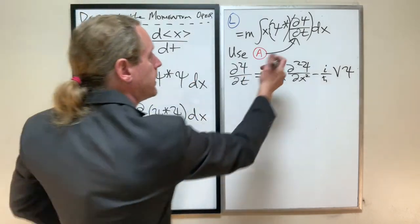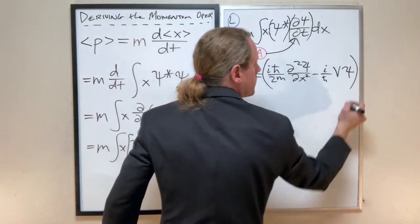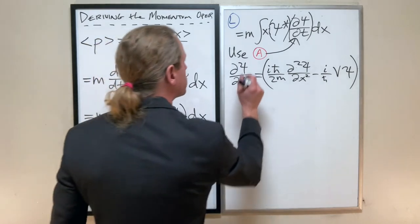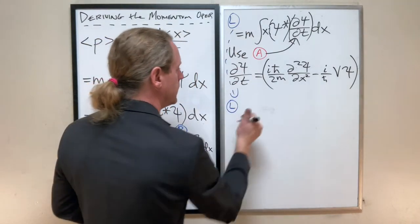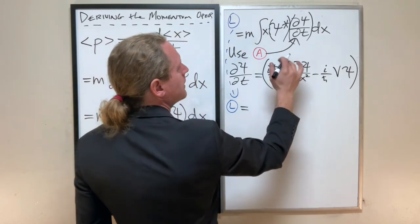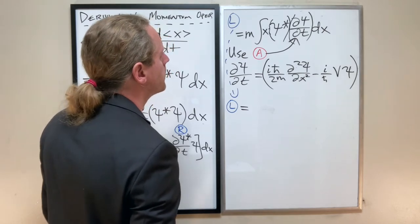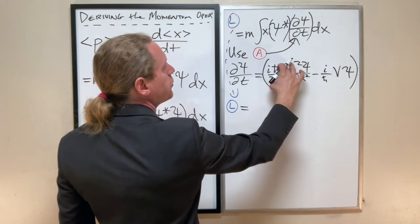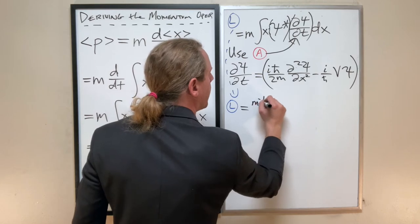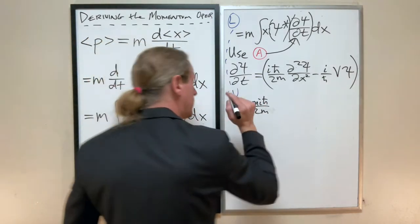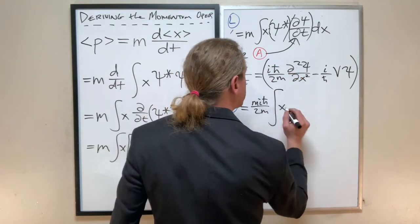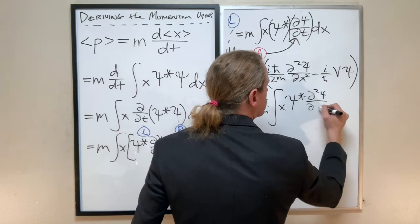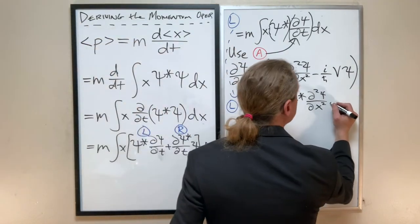So this equation will now, once we replace this part with this, look like this. So L will continue on down here equals... I'm going to pull out i ℏ over 2M. So M times i ℏ over 2M, and you see why it's a kind of silly way of saying that, but I don't care. Integral of X Psi star d²Psi/dx² minus...